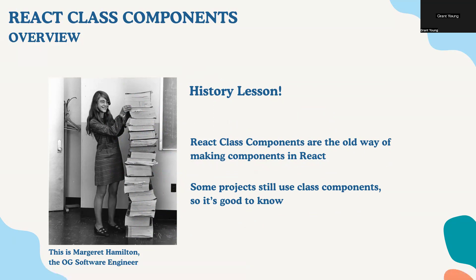A student asks: so a class is basically a reusable object — you can put anything in the constructor, and then you create a new version of it by doing `new` followed by the class name, passing in parameters that go into the constructor. And that's how `this` knows what it's talking to, because you've named it like `me`. Is that how it works? Yes, exactly.